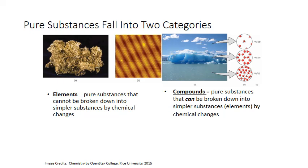Let's start with pure substances. So these can fall into two categories, pure elements or pure compounds. And the difference between the two is that elements cannot be broken down into simpler substances by chemical changes. Compounds can.